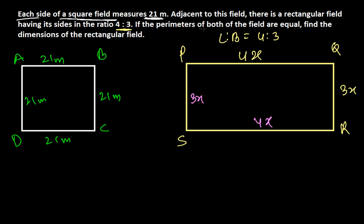Now let's come to the question. If the perimeters of both of the fields are equal, find the dimensions of the rectangular field. So the question is saying that perimeter of square is equal to perimeter of rectangle.